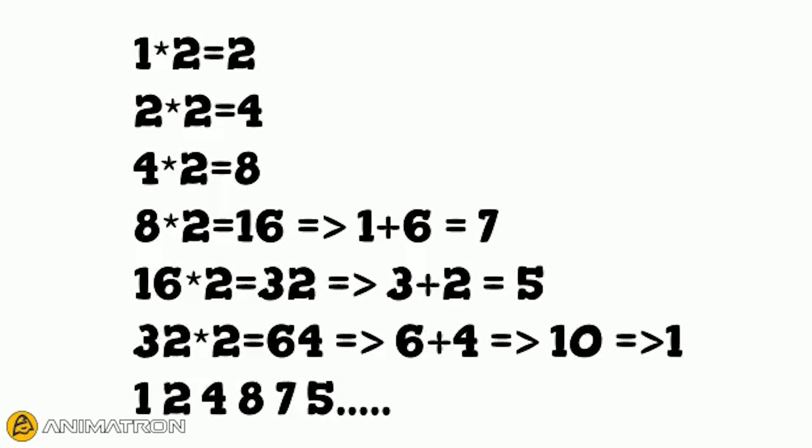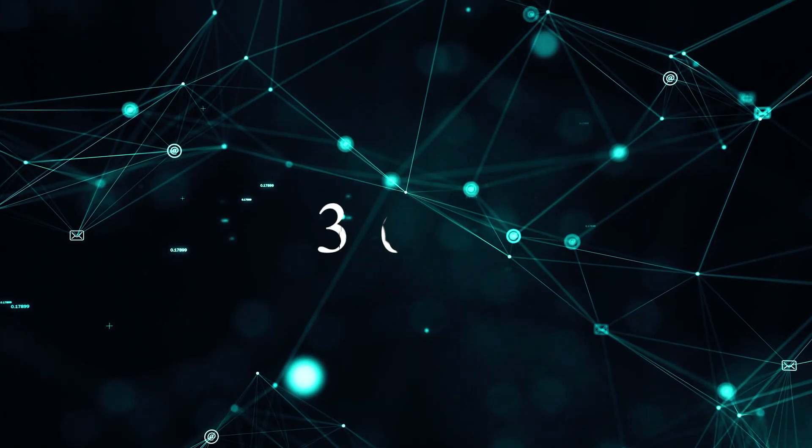If we continue, we will keep following the same pattern of 1, 2, 4, 8, 7, 5. As you can see, there is no mention of 3, 6, and 9. It's like they are beyond this pattern, free from it.